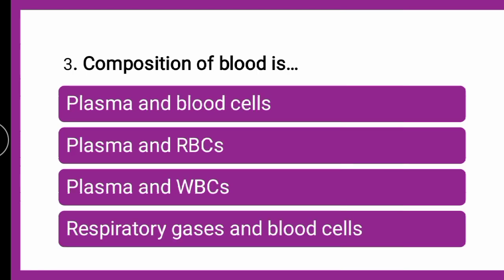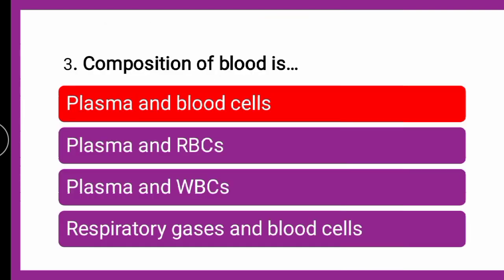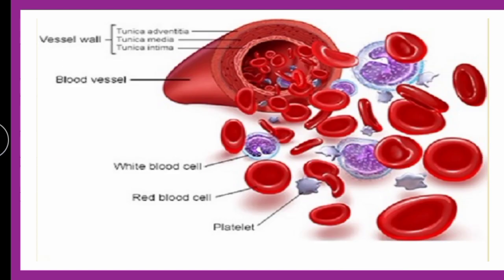Next question: composition of blood is — whether it includes plasma and blood cells, plasma and only RBCs, plasma and only WBCs, or respiratory gases and blood cells. When whole blood is centrifuged, it divides into fractions: plasma (transparent fluid), a buffy coat of WBCs and platelets, and the colored portion of erythrocytes. The correct answer is plasma and blood cells, which include WBCs, RBCs, platelets, and plasma.